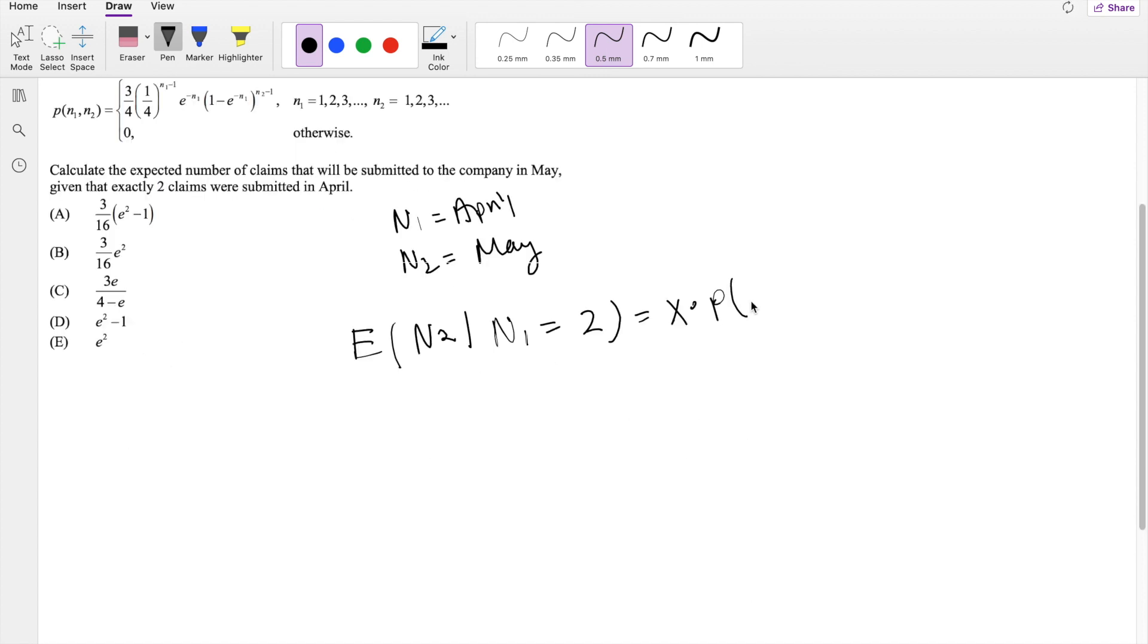X times the probability of N2 given N1. So I'm going to work on the probability of N2 given N1 first. This by the conditional probability of joint distribution formula, we know this is equal to N2, the F of N2, N1, divided by the F of N1, the marginal distribution of N1.